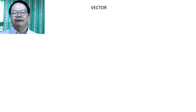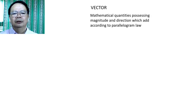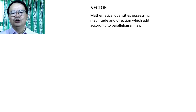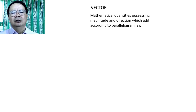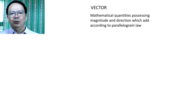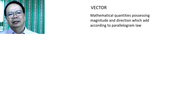Let's start with the definition of a vector. A vector is a mathematical quantity that possesses both magnitude and direction, which add according to the parallelogram law. Any mathematical quantity that possesses both magnitude and direction is considered to be a vector. A good and very common example of a vector is a force, because a force is a quantity that has both magnitude and direction.